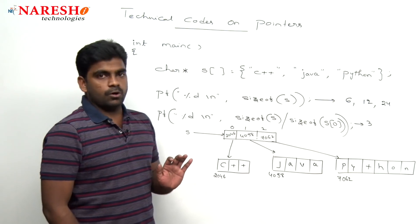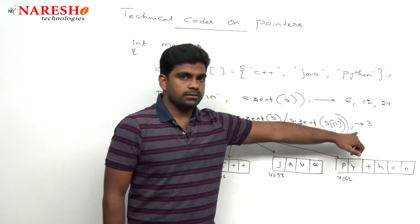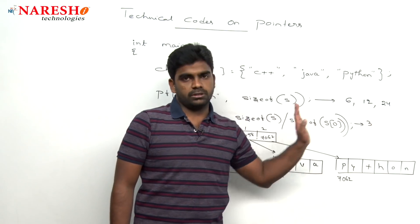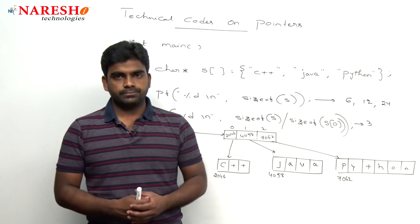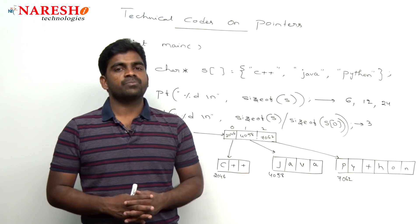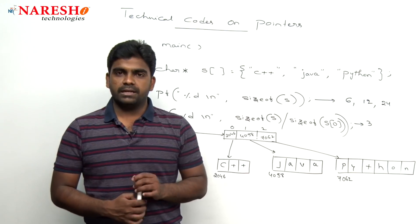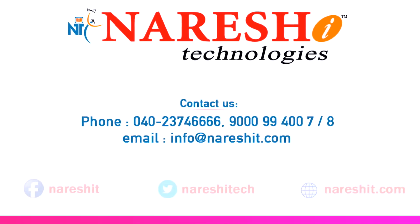So this is the output, it is like either 6 or 3, 12 or 3, or 24 or 3, depends on the compiler you are using to execute this programming. Hope you understood. For more videos please subscribe to Naresh IT channel. Thank you.